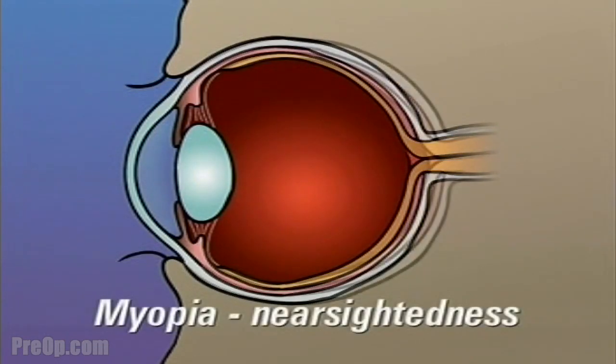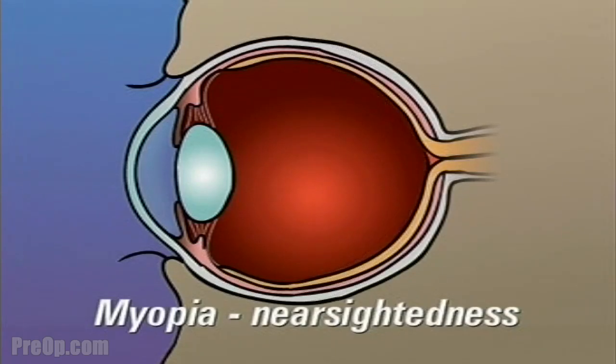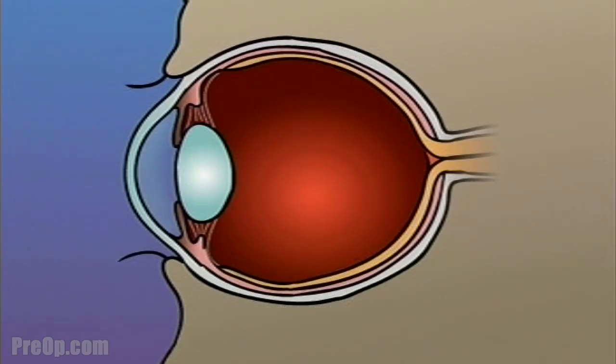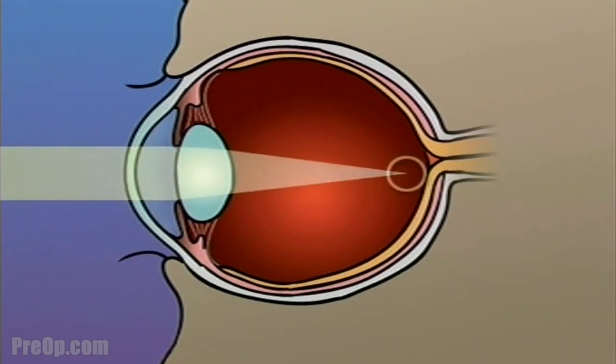Myopia, or nearsightedness, occurs when the shape of the eye is too long or the curve of the cornea is too extreme. In this case, light rays are focused on a point in front of the retina, instead of on the retina itself.